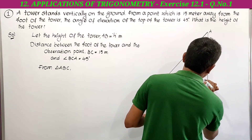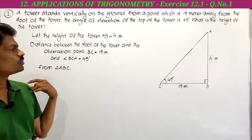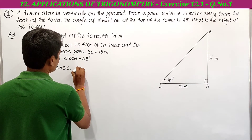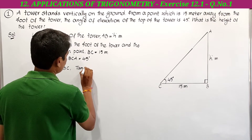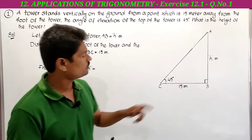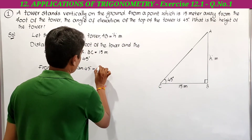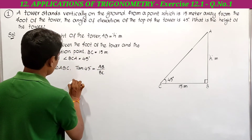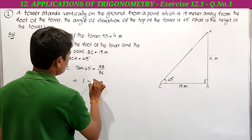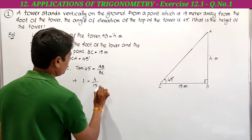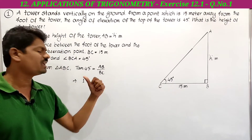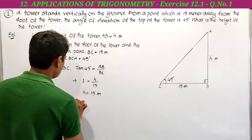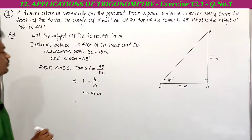The right angle is at B. Now apply tan 45. Tan theta equals opposite side by adjacent side, so tan 45 degrees equals AB by BC. We know tan 45 degrees equals 1. AB equals h meters, BC equals 15 meters. So 1 equals h divided by 15, therefore h equals 1 times 15 equals 15 meters.